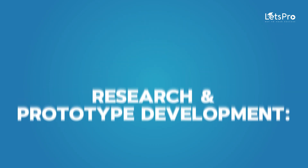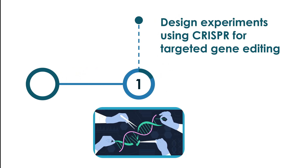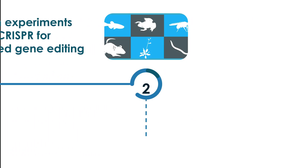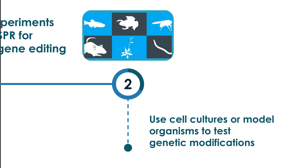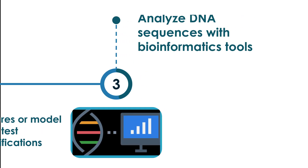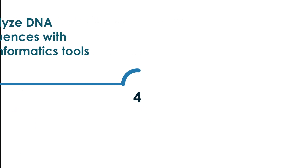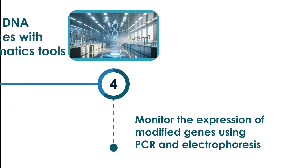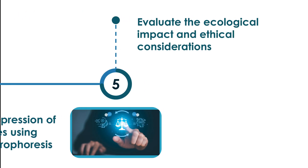For research and prototype development: design experiments using CRISPR for targeted gene editing; use cell cultures or model organisms to test genetic modifications; analyze DNA sequences with bioinformatics tools; monitor the expression of modified genes using PCR and electrophoresis; and evaluate the ecological impact and ethical considerations.